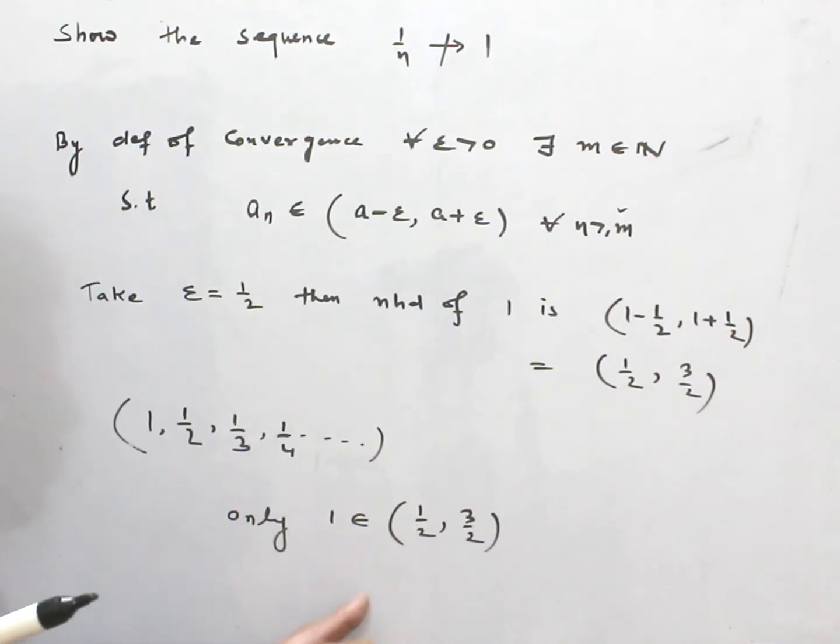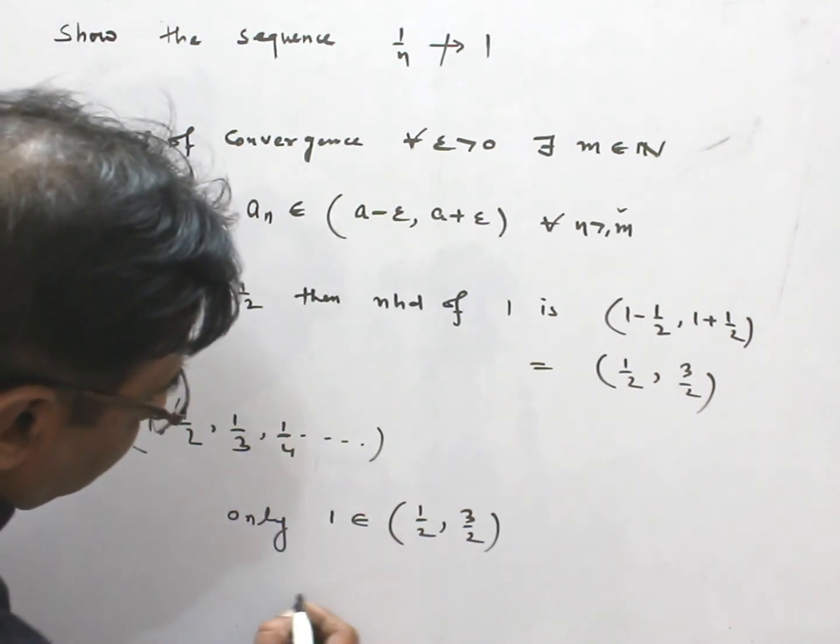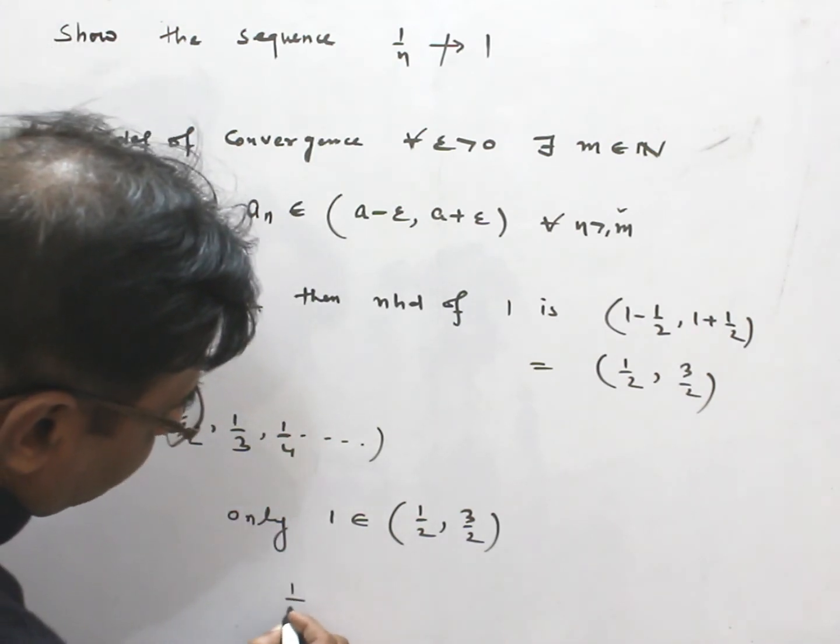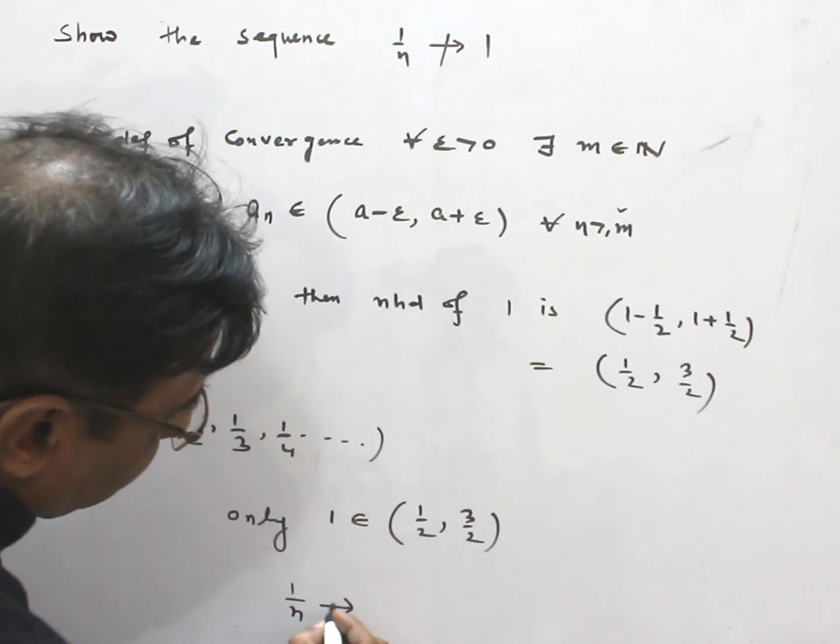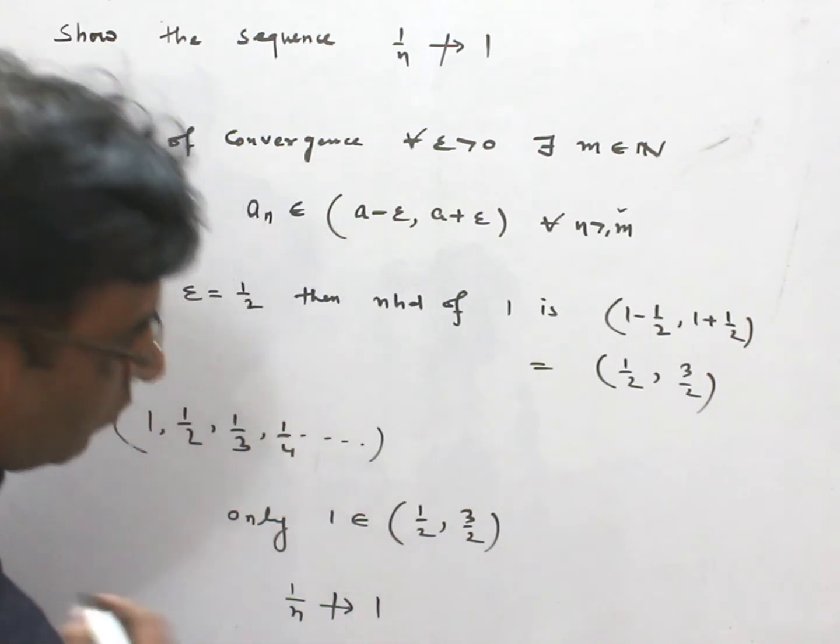But in this case, only one of these terms will fall in the neighborhood in this interval. So, this means 1/n not converging to 1.